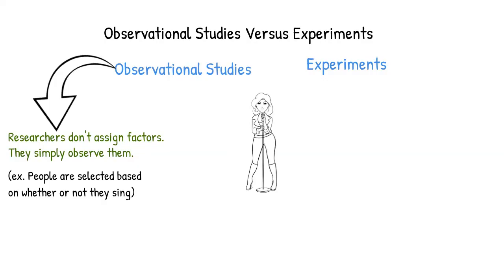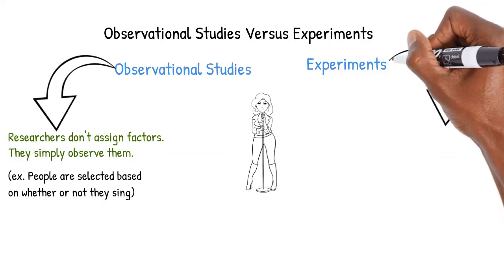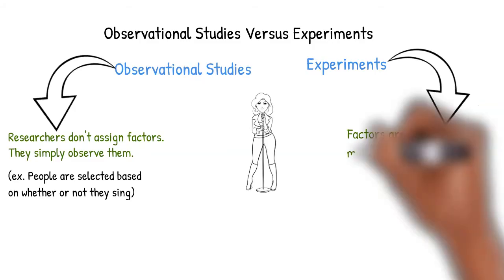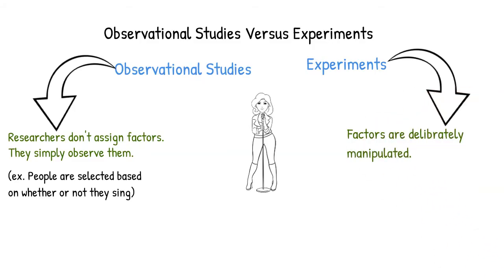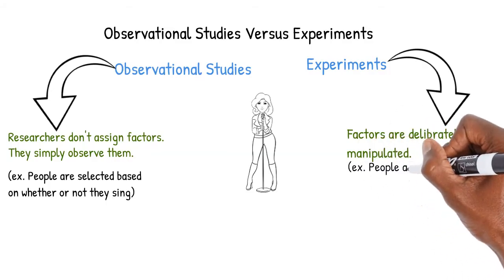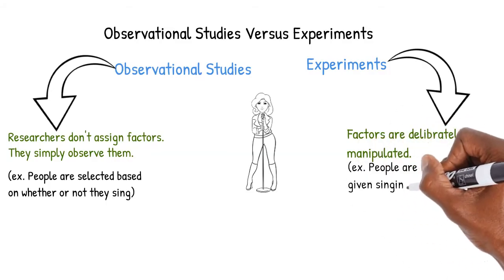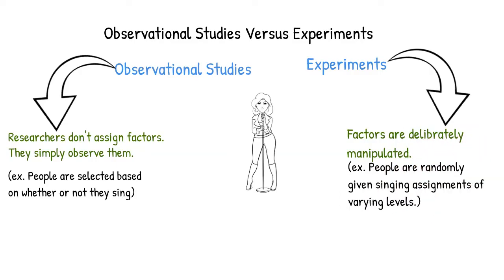On the other hand, in an experiment, factors are deliberately manipulated, allowing us to determine causality. So in this example, after participants are chosen, they can be randomly given singing assignments of varying levels. Perhaps some of our participants are not allowed to take voice lessons, while others must take one voice lesson per week, and others have to take two.